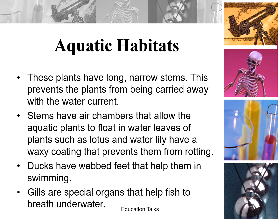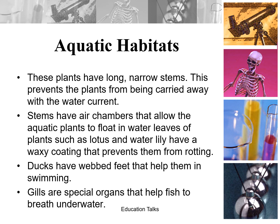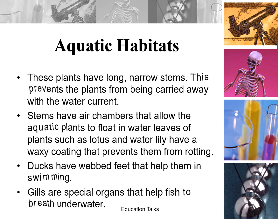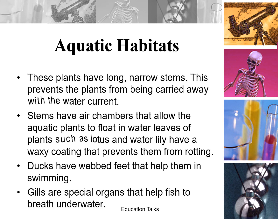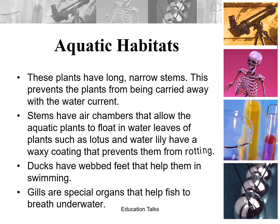Aquatic habitats: these plants have long, narrow stems, which prevents them from being carried away by the water current. Stems have air chambers that allow the aquatic plants to float in water. Leaves of plants such as lotus and water lily have a waxy coating that prevents them from rotting. Ducks have webbed feet that help them in swimming.